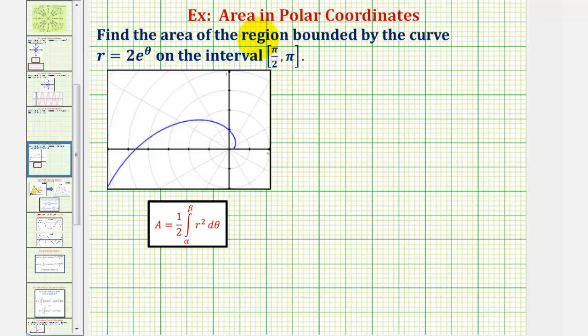The terminal side of pi over two radians would be here, and the terminal side of pi radians would be here. Therefore, we're integrating from here to here, accumulating the area bounded by the polar curve. We're finding the area of this shaded region here.